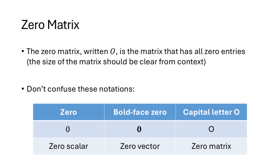The zero matrix, written capital O, is the matrix with all zero entries; its size should be clear from context. We now have three different zero objects with different notations: the regular number zero (the scalar), written as the numeral 0; boldface zero, representing the zero vector; and capital letter O, representing the zero matrix. Be careful to distinguish between these notations.